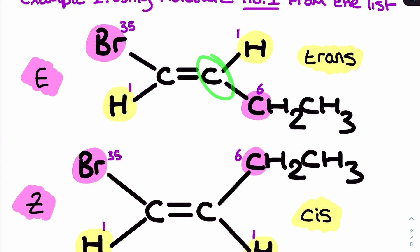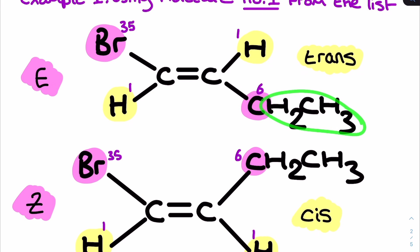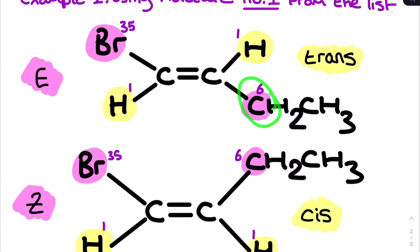For the right-hand carbon, the immediate atoms connected to it are hydrogen and carbon — atomic numbers one and six respectively. I don't need to look further along the chain because these two are already different, but if they were both carbons I would keep going until I find a difference. Here carbon is the high priority group because six is greater than one. Since the bromine and the carbon are on opposite sides — above and below — this is the E stereoisomer.